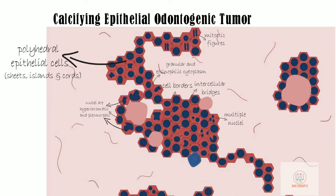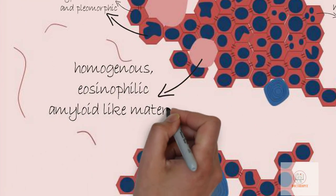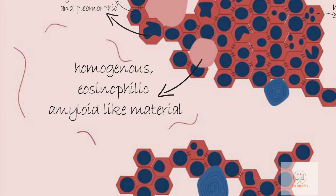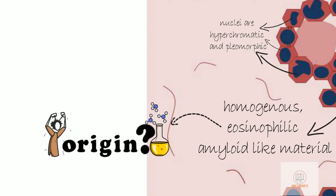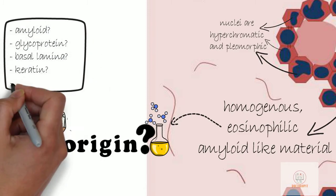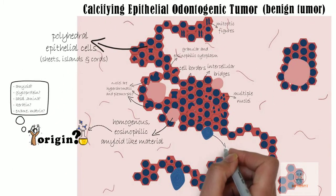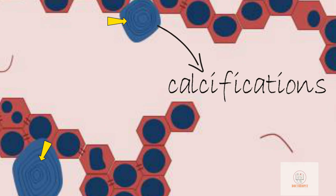Despite these dysplastic features, CEOT is a benign tumour. The tumour also has the presence of homogenous eosinophilic amyloid-like material interspersed between the tumour cells. Even though extensively investigated, the true nature of its origin is still not known — they are thought to be amyloid, glycoprotein, basal lamina, keratin, or enamel matrix. The characteristic calcifications of CEOT are seen as irregular round bodies showing concentric bands due to periodic precipitation, often called Liesegang rings.